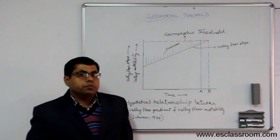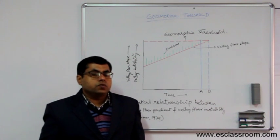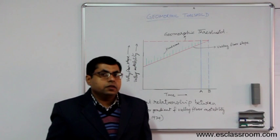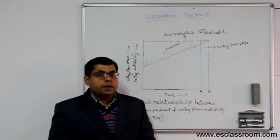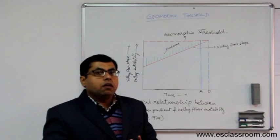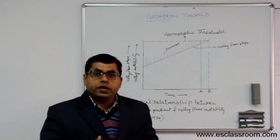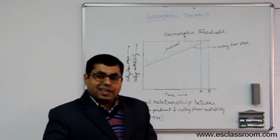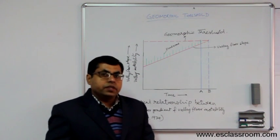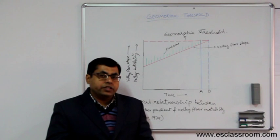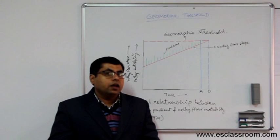So we saw those two examples. Now these two examples were basically extrinsic threshold. So the system was not by itself responding or there was no change within the system that has caused that movement. But in geomorphology, there are two types of thresholds. One is intrinsic threshold, the other one is extrinsic threshold. We have seen examples of extrinsic threshold.